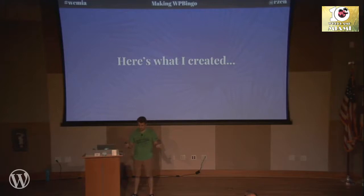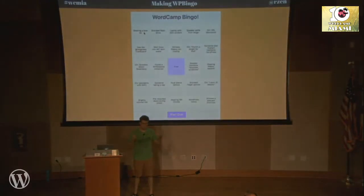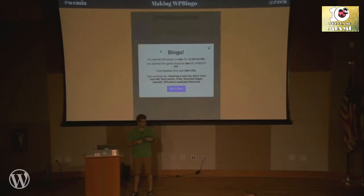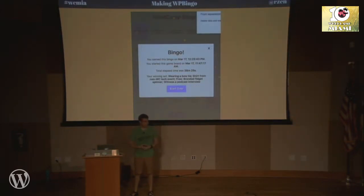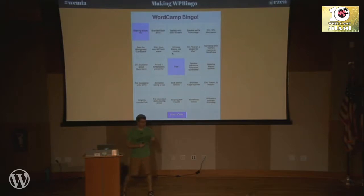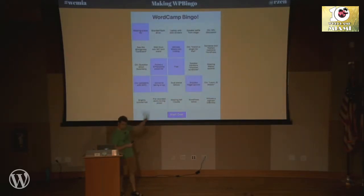So I made WPBingo.com. When you load it up, it generates a random board for you. There are something like 70 possible squares it can pull from. It pulls 24, puts a free square right in the middle, and any time you get five in a row in any direction, you get a bingo. You can choose to start a new game and it generates a brand new board. If you end up with a bogus board you can't win, you can hit the start over button at the bottom and it will wipe it and pull down a new one.